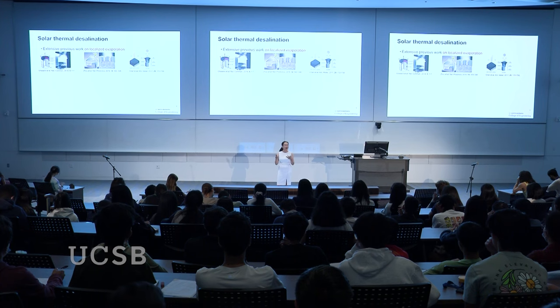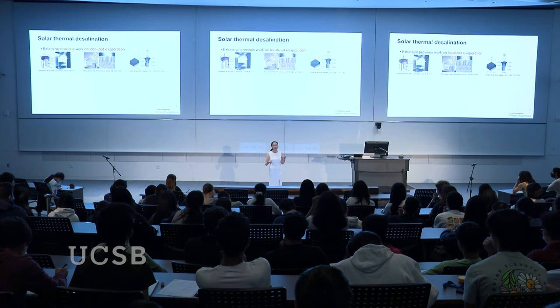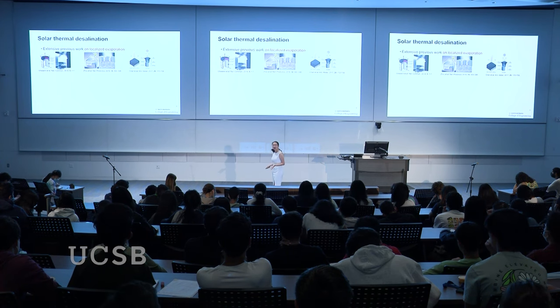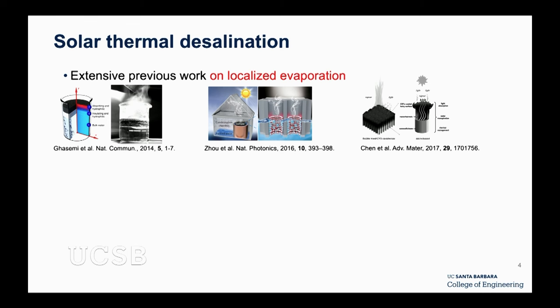Sunlight is actually a free energy source — you have sunlight everywhere and it's clean energy that doesn't generate CO2. There has been a lot of effort looking at solar thermal desalination: how can you utilize sunlight to desalinate? The principle is that you use sunlight to heat a material that absorbs light and turns it to heat, then use that heat to evaporate saltwater to produce water vapor, which you then condense back to fresh liquid water.